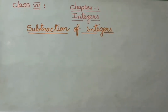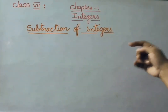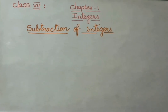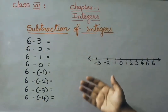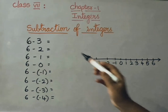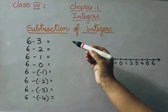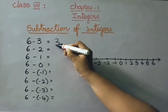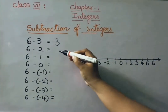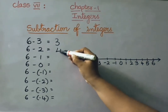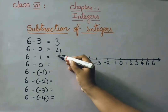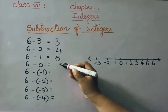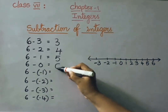Today I am going to explain Chapter 1: integer subtraction of integers. Now let us study the subtractions given below. 6 minus 3 is 3. 6 minus 2 is 4. 6 minus 1 is 5. 6 minus 0 is 6.